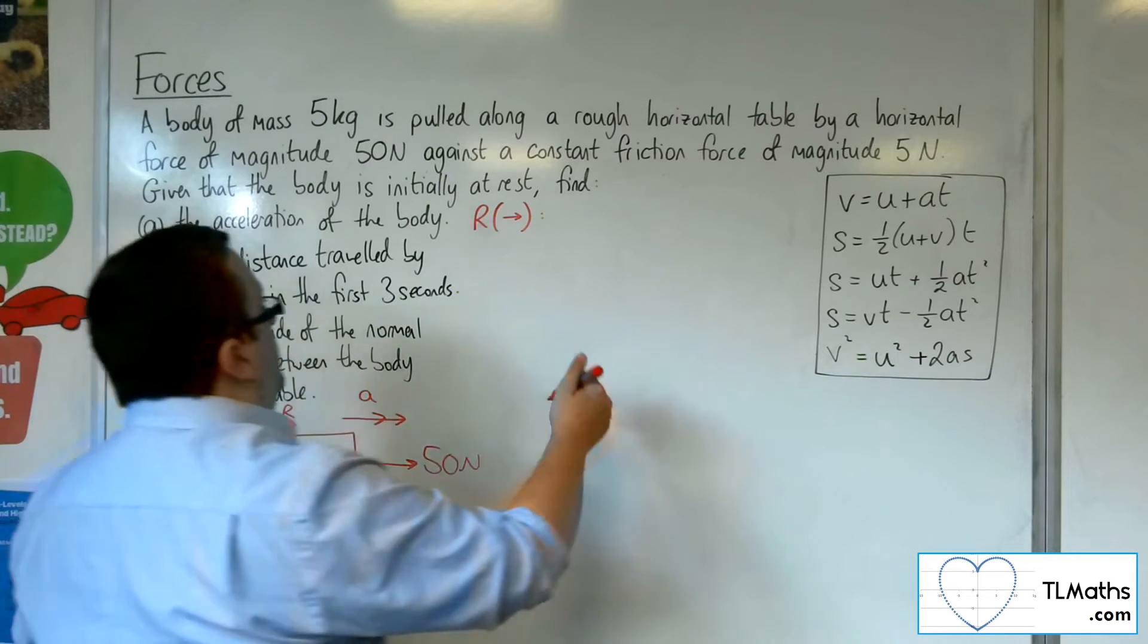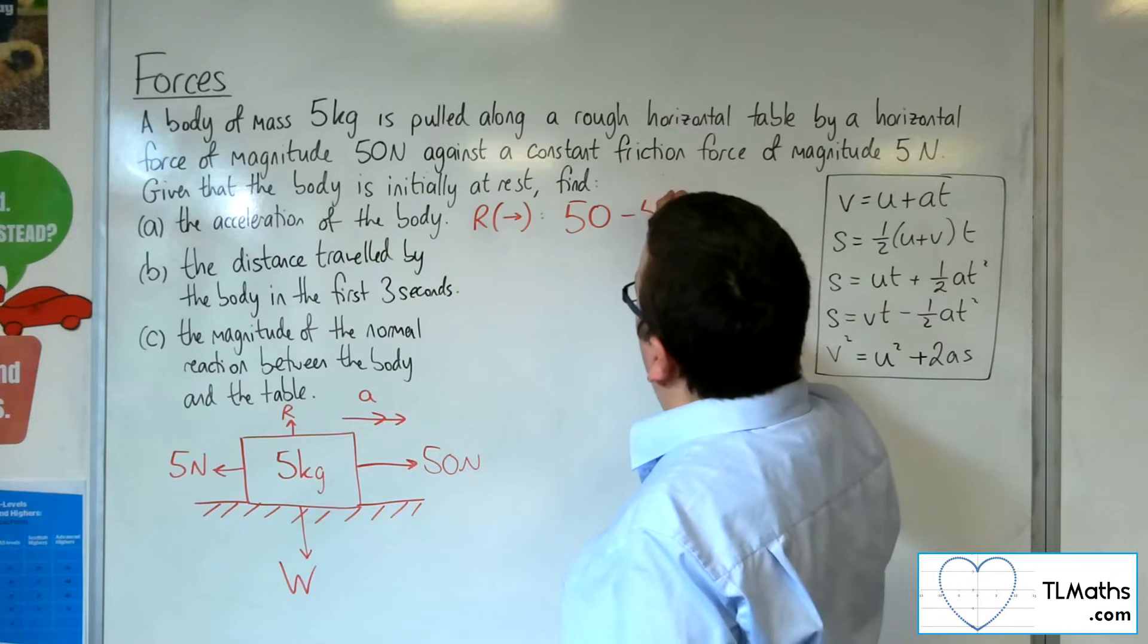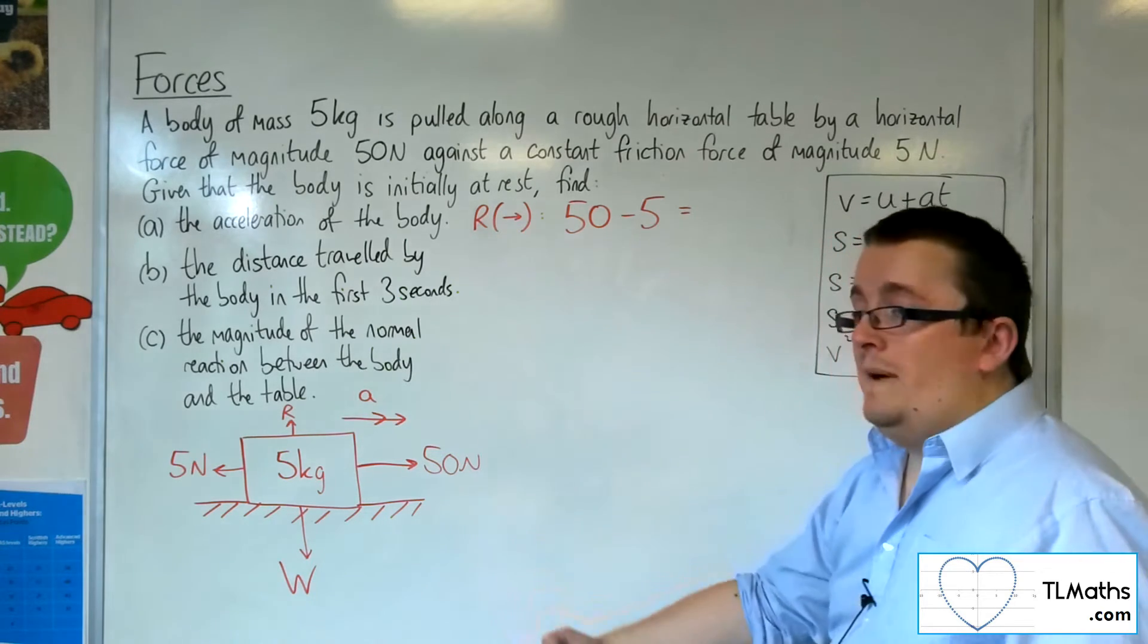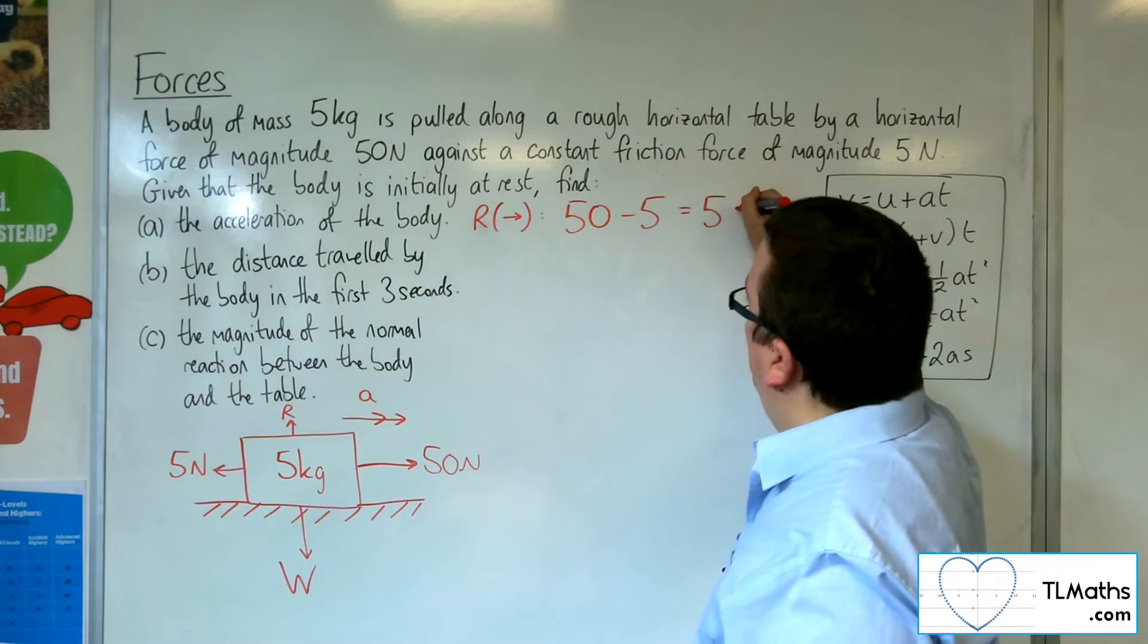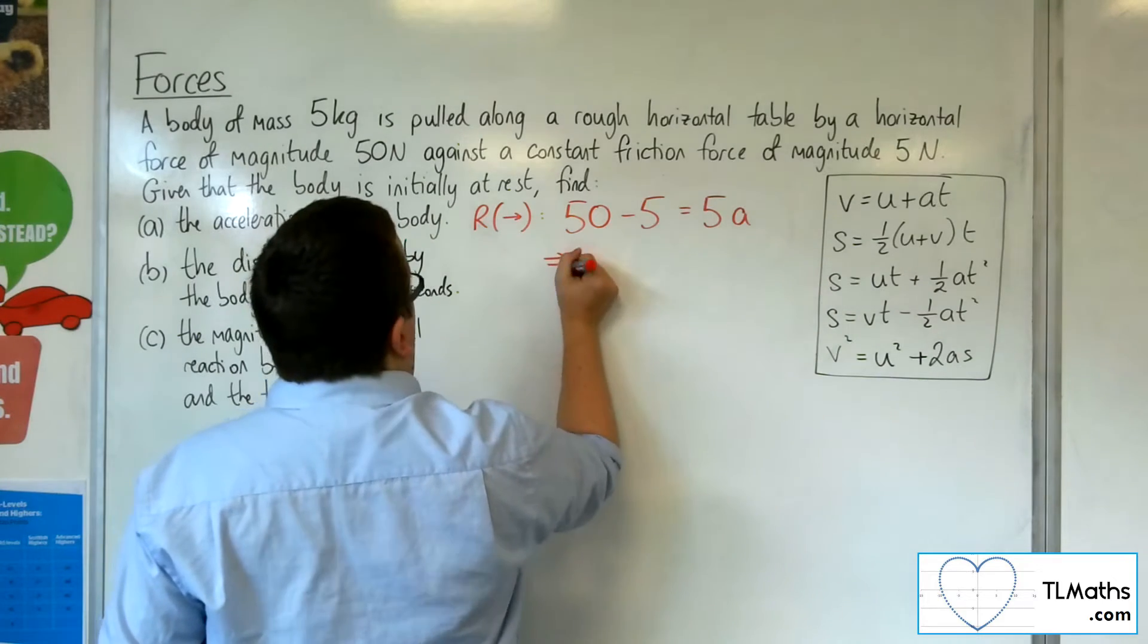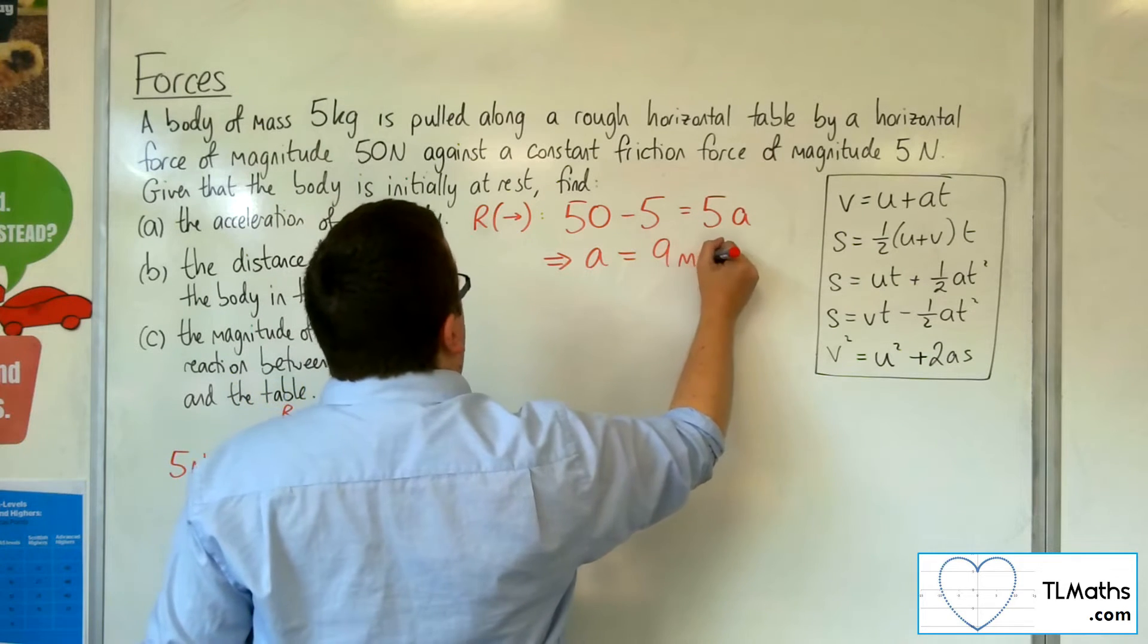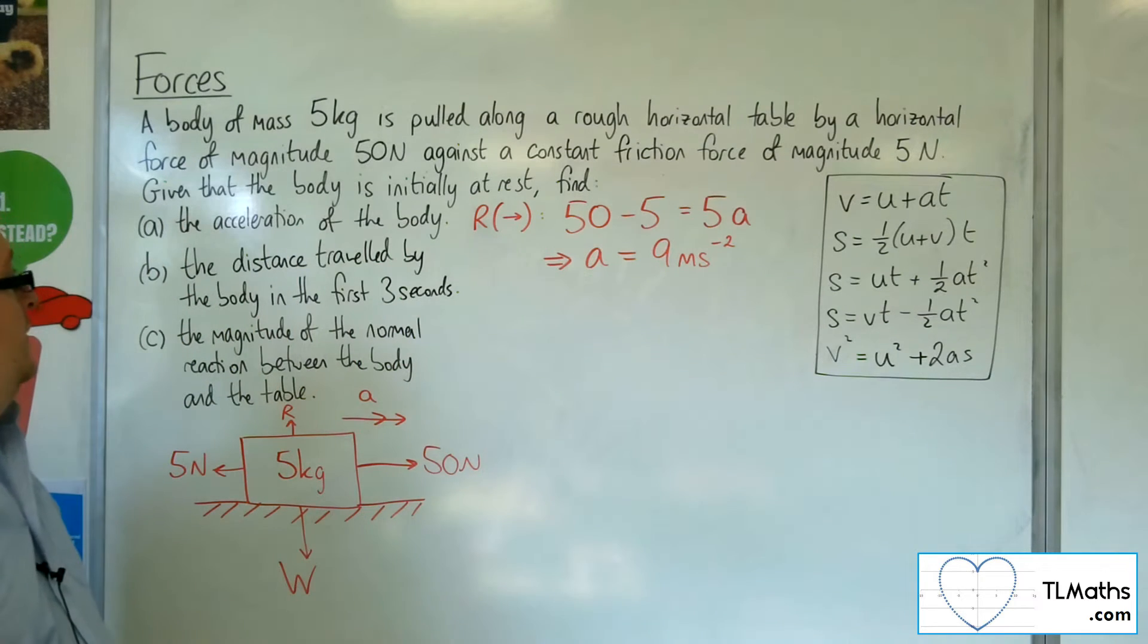So we've got the 50 newtons working to the right. I've got the 5 newtons working to the left. So this is the resultant force, the net force, and that's going to be equal to the mass times acceleration, F equals MA. So the mass is 5, the acceleration is A. So 50 take away 5 is 45. Divide by 5 gets me 9. So A is 9 metres per second per second. So there's our acceleration.